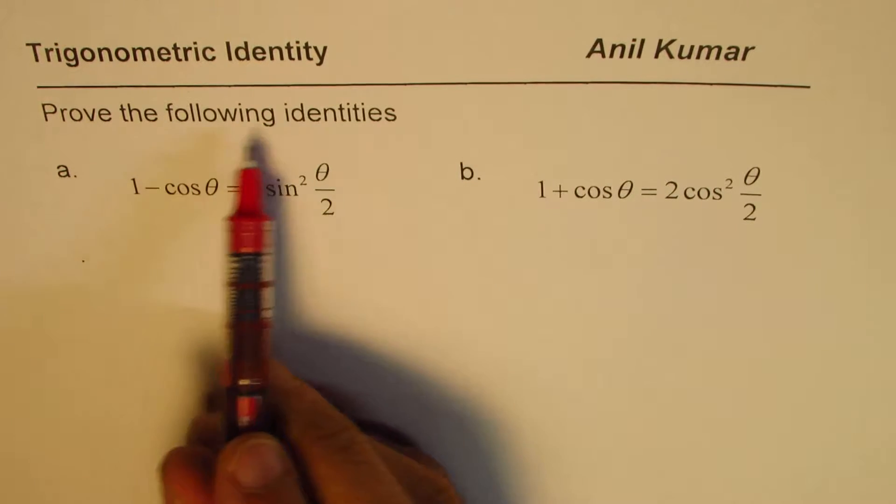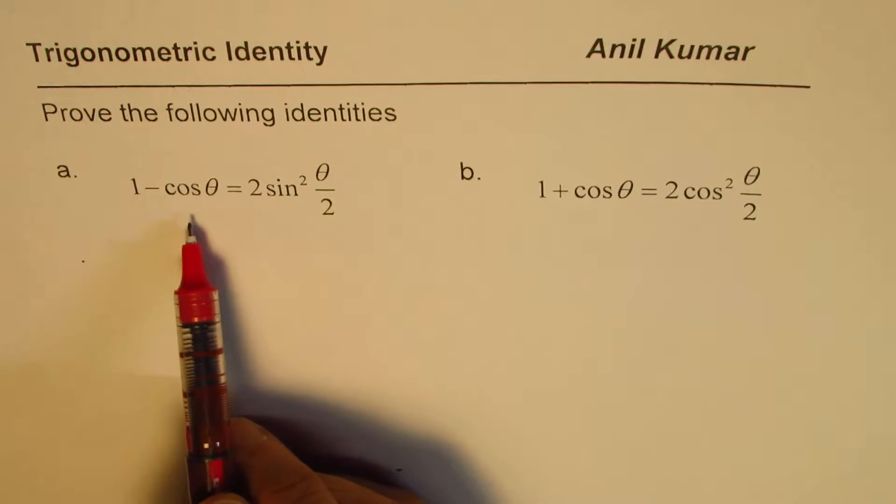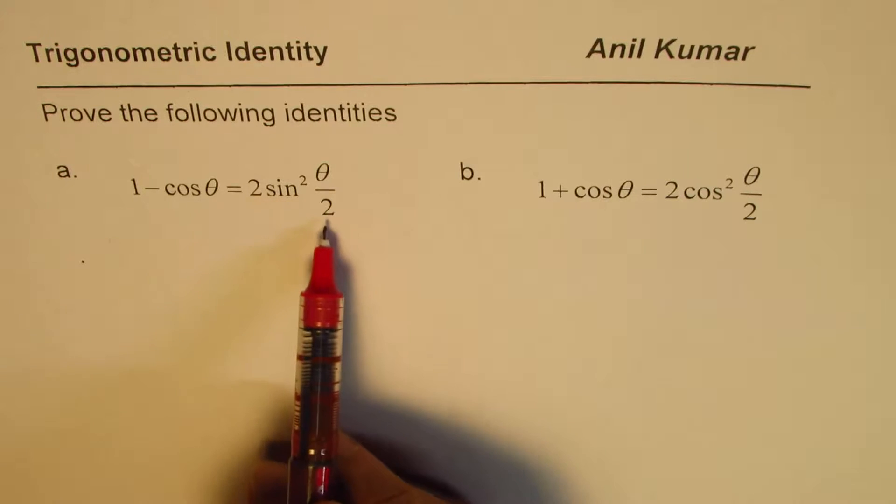So we need to prove the following identities. The first one is 1 minus cos theta equals to 2 sine square theta by 2.